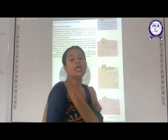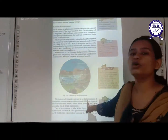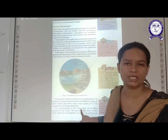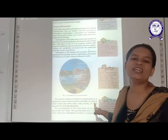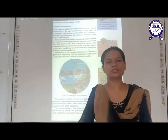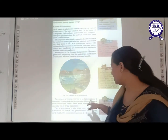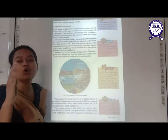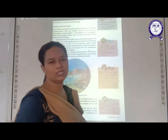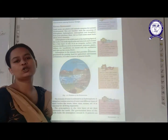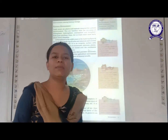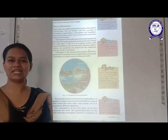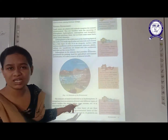Then we will talk about the second domain of the Earth, and that is hydrosphere. The word 'hydro' always represents water, and the word 'sphere' always represents land. So hydrosphere is the domain of water. If we are talking about water, that means we are involving all the water bodies, all the oceans, all the lakes, all the rivers — all in the domain called hydrosphere.